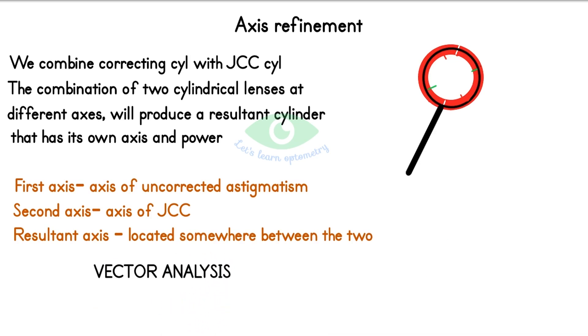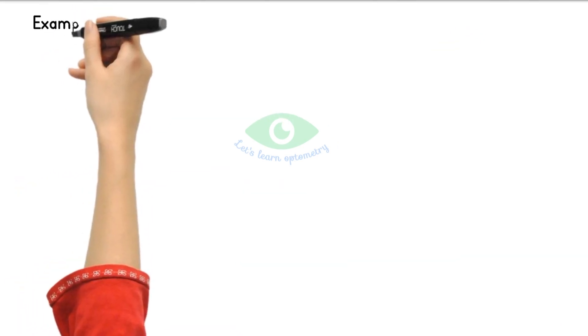All these calculations are based on the vector analysis of the obliquely crossed cylinders. The patient may report that the resultant axis that is closer to the true axis will appear clearer.